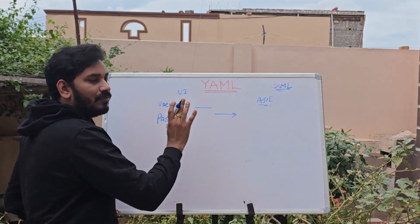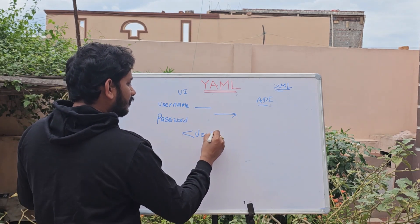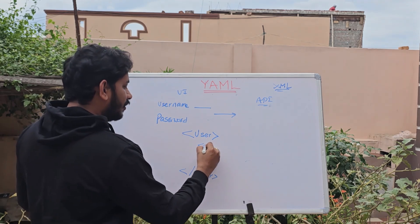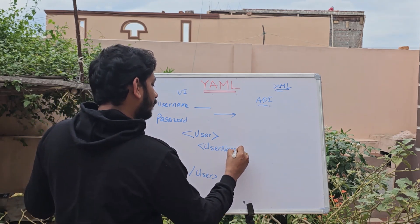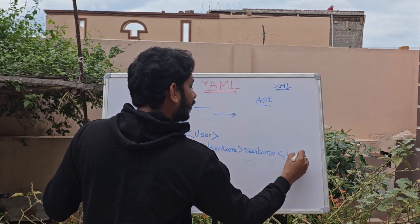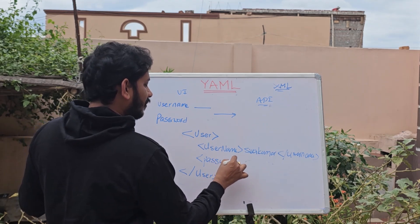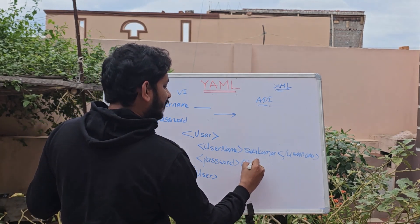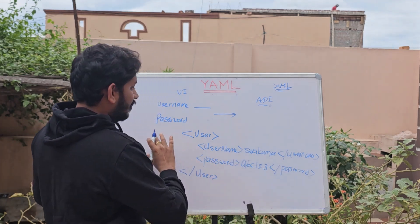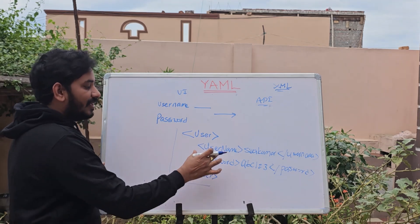XML is also a type of markup language. This XML is a form of user — this is a markup, this is a user, this is username. For example: Sivakumar. Here is a password: ABC123. So this is a markup — this is a user field. Here is a start and end. This is a username and password.